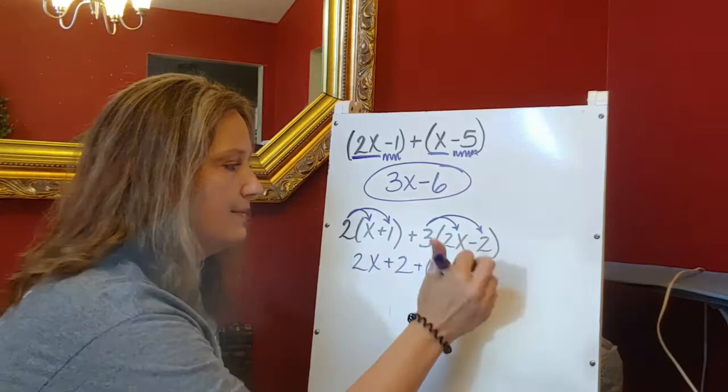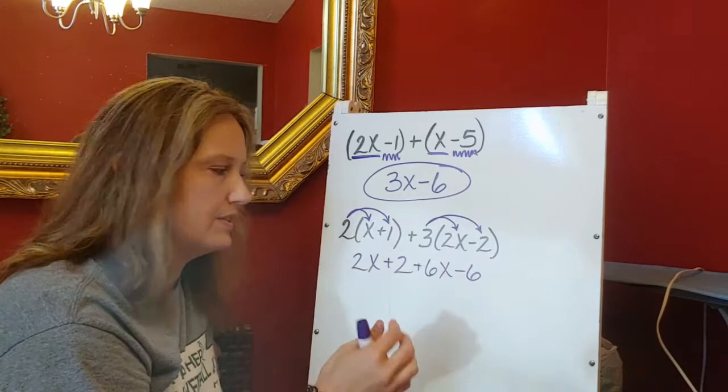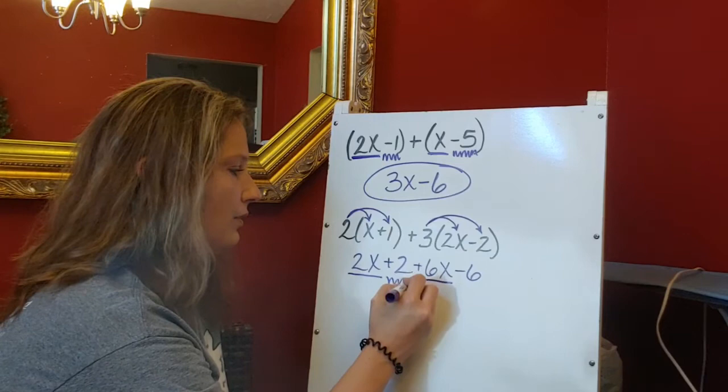Once we get to this step, it's kind of like what we did up here where we're combining like terms. So my 2x and my 6x are like terms. My 2 and my negative 6 are like terms.